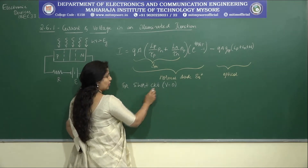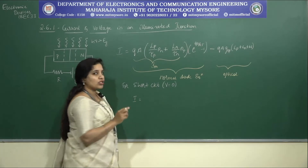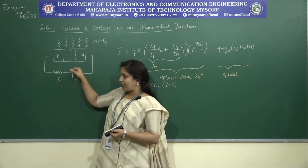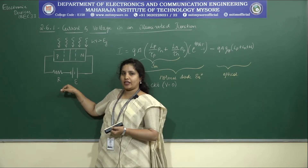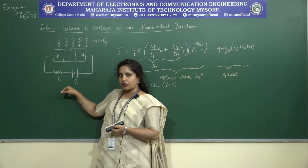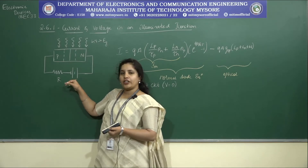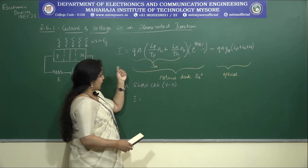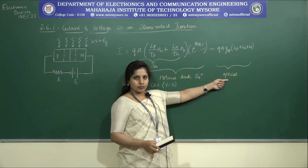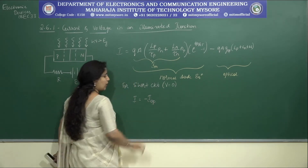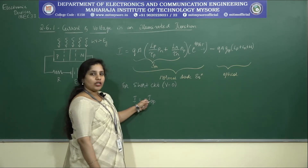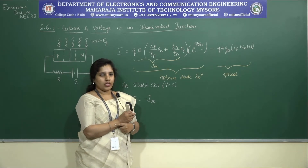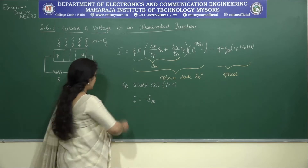Since it is a short circuit, the entire first term becomes zero. The only current observed is the optical current. Therefore, the total current equals the optical current flowing in the device. The negative sign is used because that current flows from N towards P, which is the reverse direction.